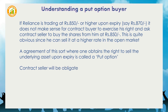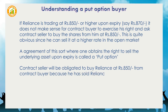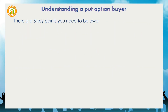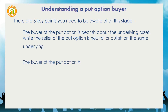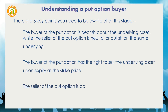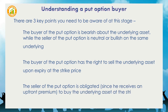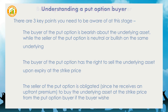The contract seller will be obligated to buy Reliance at Rs.850 from the contract buyer because he has sold the Reliance 850 put option to the contract buyer. There are three key points to be aware of: the buyer of the put option is bearish about the underlying asset, while the seller is neutral or bullish. The buyer has the right to sell the underlying asset upon expiry at the strike price. The seller is obligated — since he receives an upfront premium — to buy the underlying asset at the strike price from the put option buyer if the buyer wishes to exercise his right.